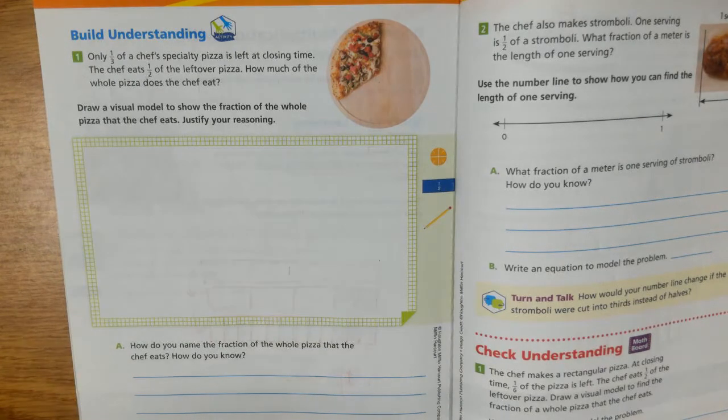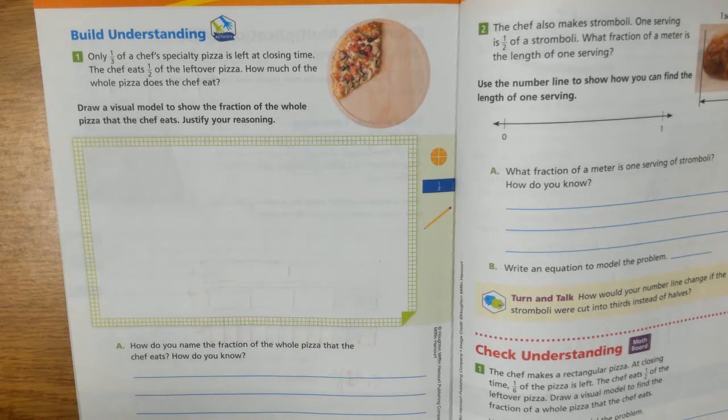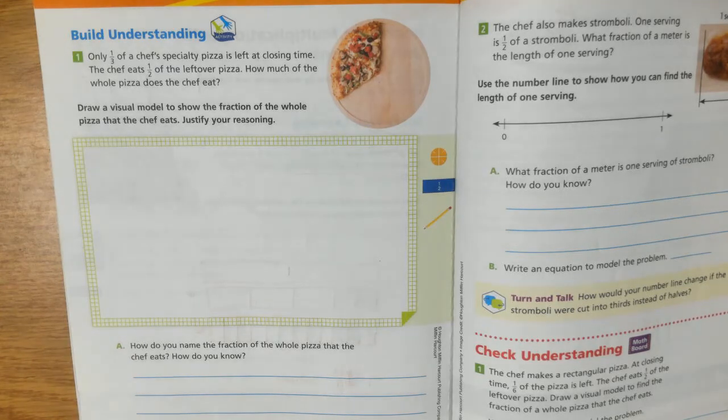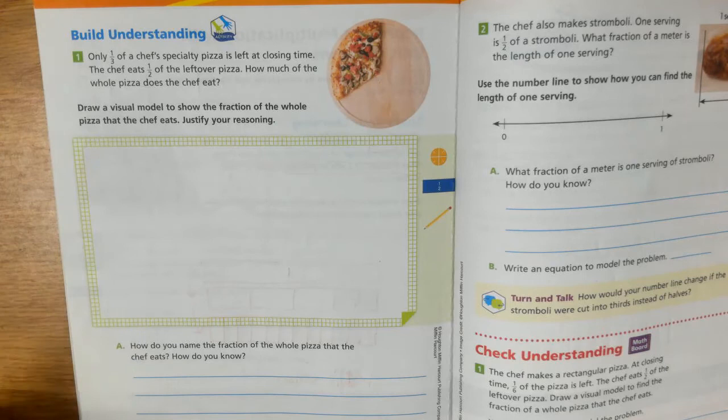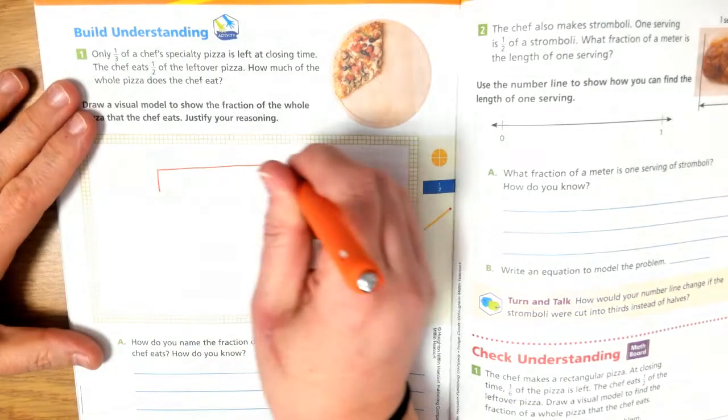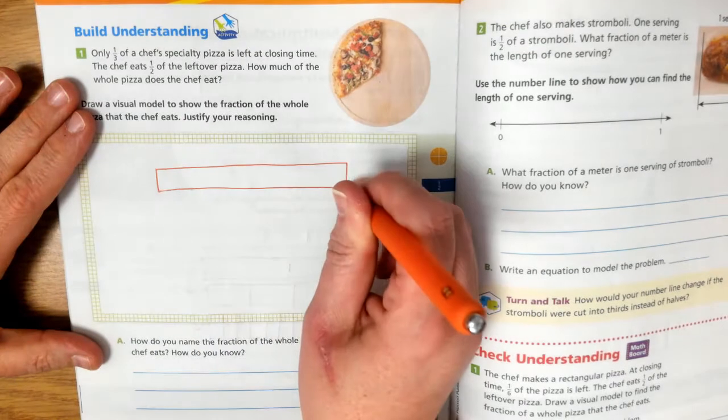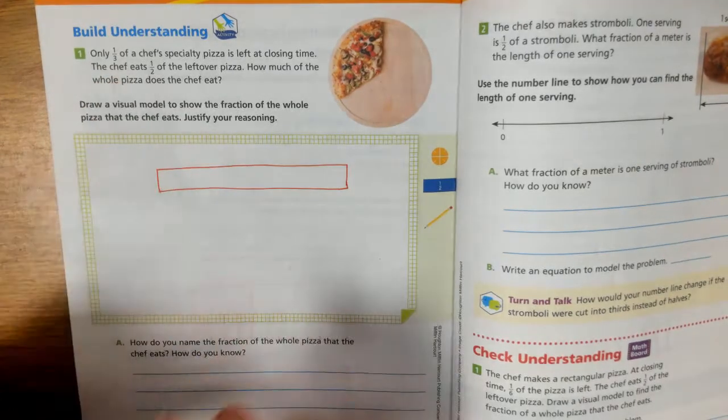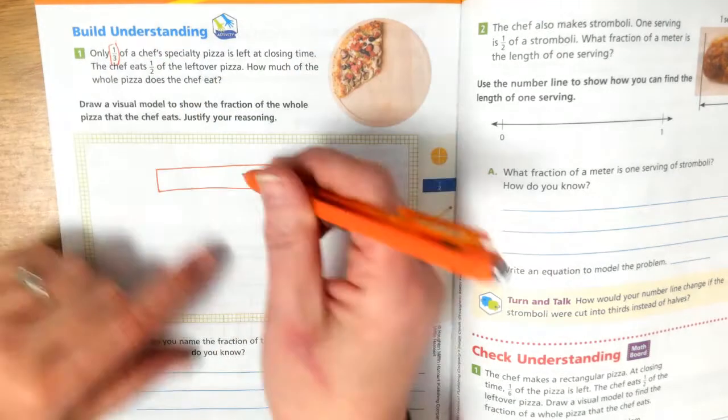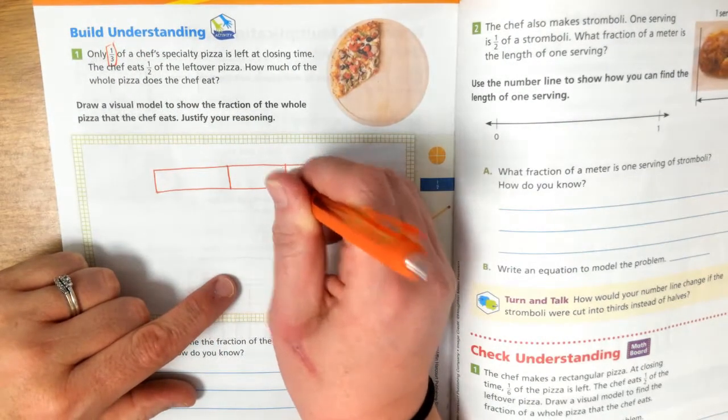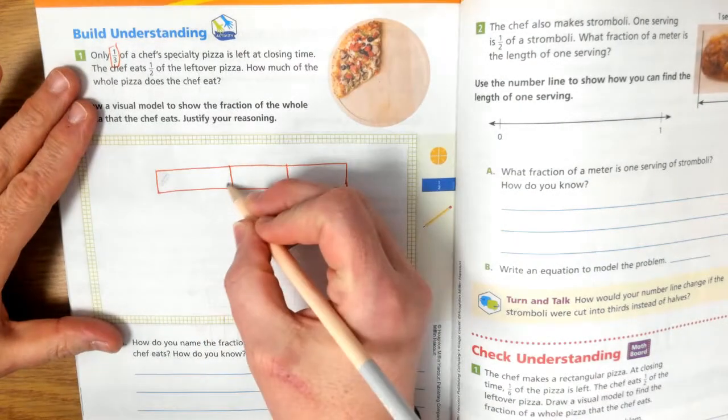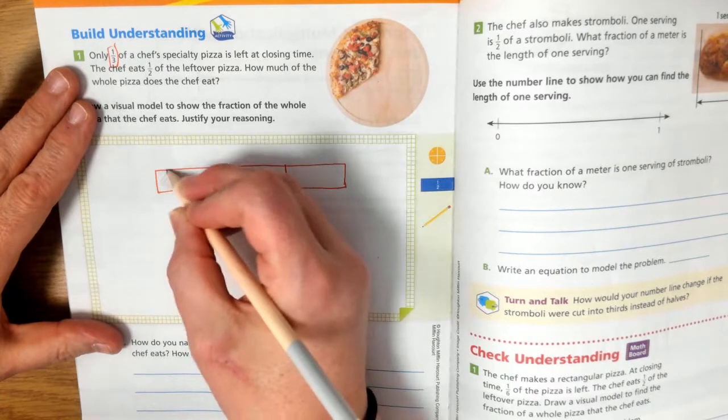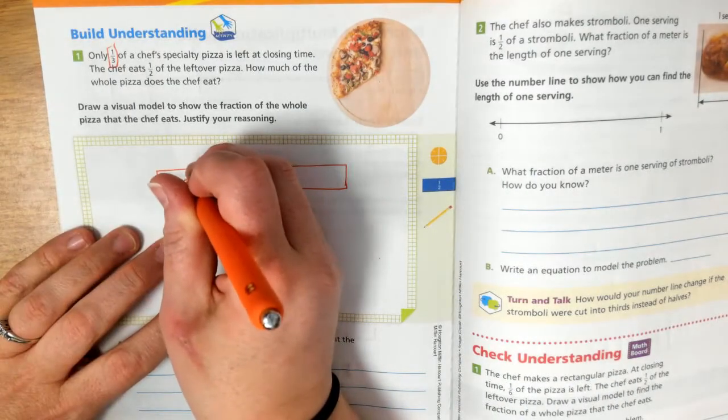So only one-third of a chef's specialty pizza is left at closing time. The chef eats half of the leftover pizza. How much of the whole pizza does the chef eat? Now, I am not great with doing this kind of stuff with circles. So I'm not even going to attempt. I'm just going to use a bar model because circles are hard to break up into fairly equal pieces. So just bear with me. Pretend this is the pizza. One-third of the pizza is left. So we have this much of our pizza left, which is one-third.